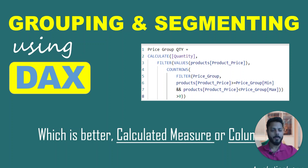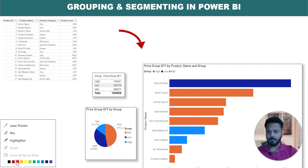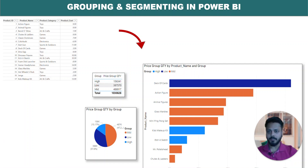First of all, what is grouping? Grouping is creating the segments of a particular column. Let's say you have a product cost — let me just highlight this.